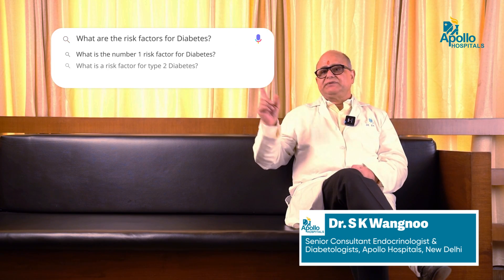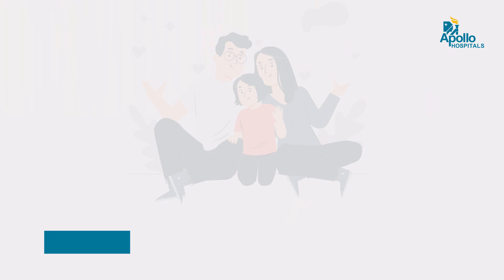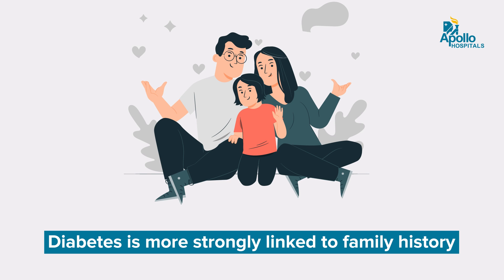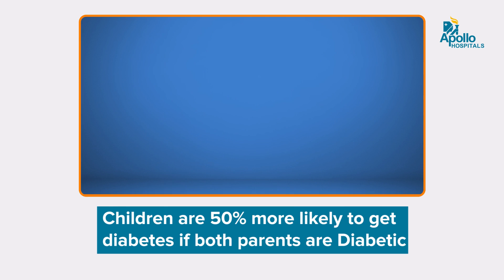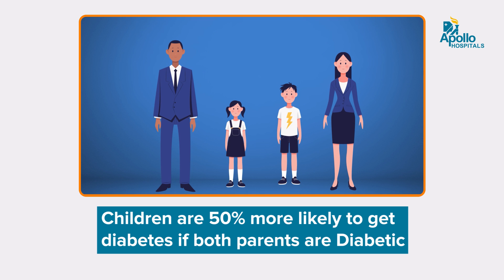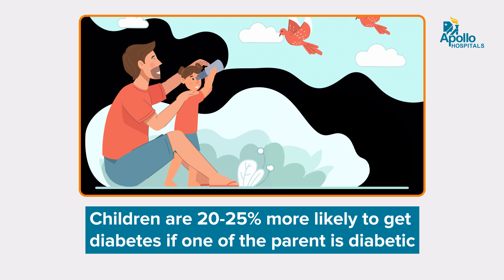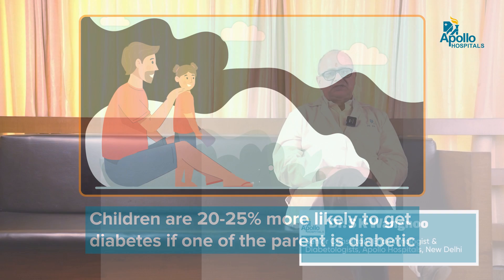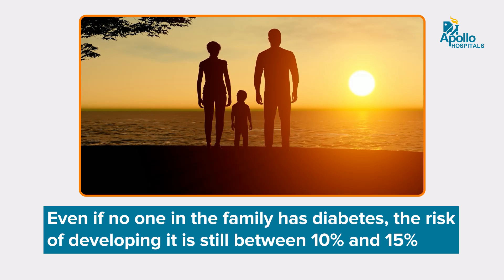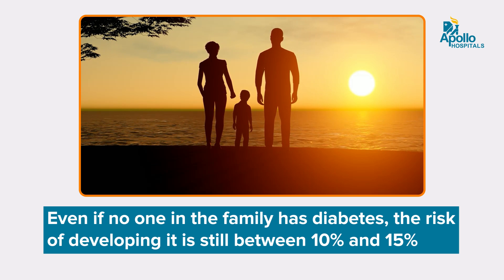What are the risk factors for diabetes? The commonest risk factor is a strong family history of diabetes. For example, if both parents are having diabetes, there are 50% chances of you getting diabetes in the near future. If one of the parents is diabetic, then you have roughly around 20 to 25% chances of getting diabetes. Even if none of your parents have diabetes, there are still some chances of up to 10 to 15%. This is the biggest risk.